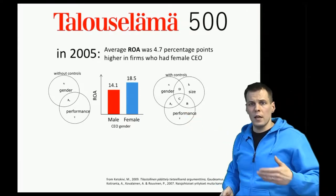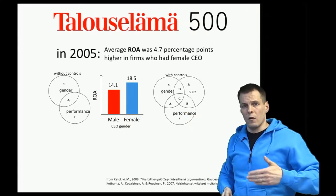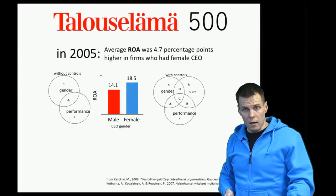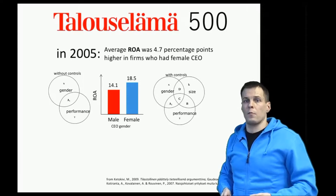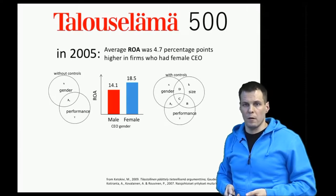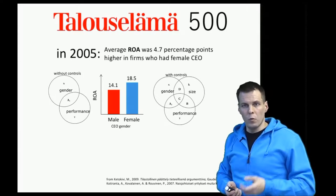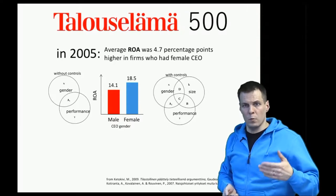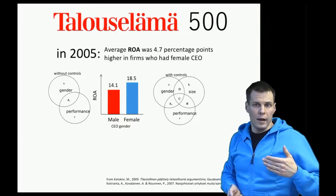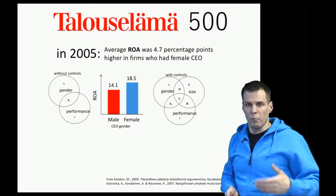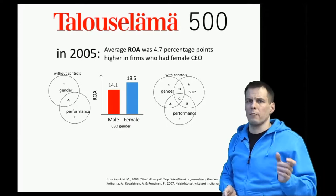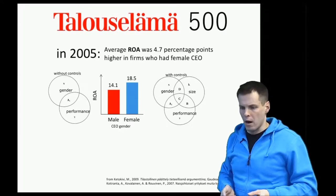So how do we take that kind of control variable into account? One intuitive way is an instance of a general strategy called matching, where we try to make the samples more comparable.